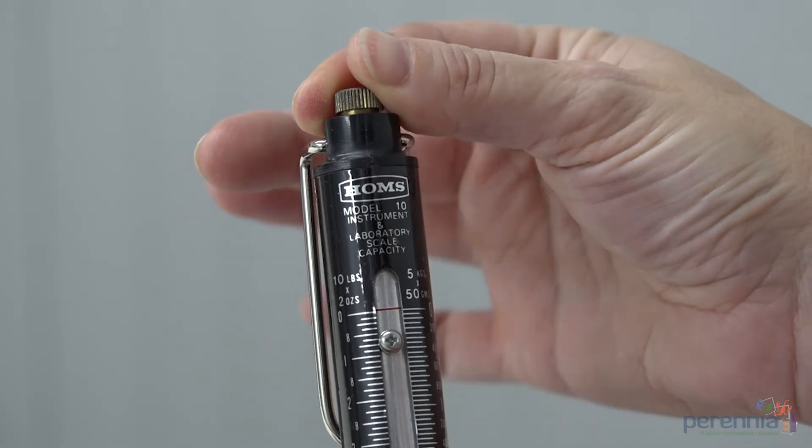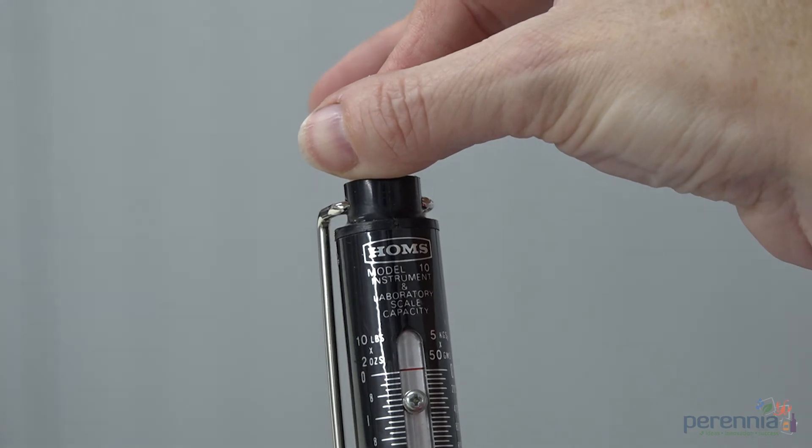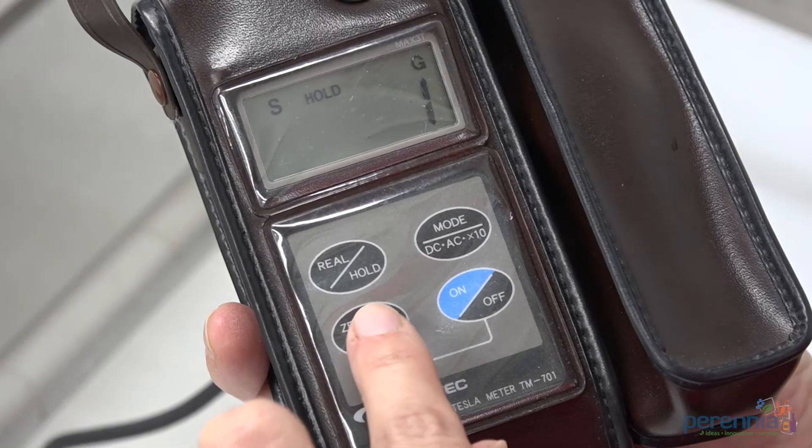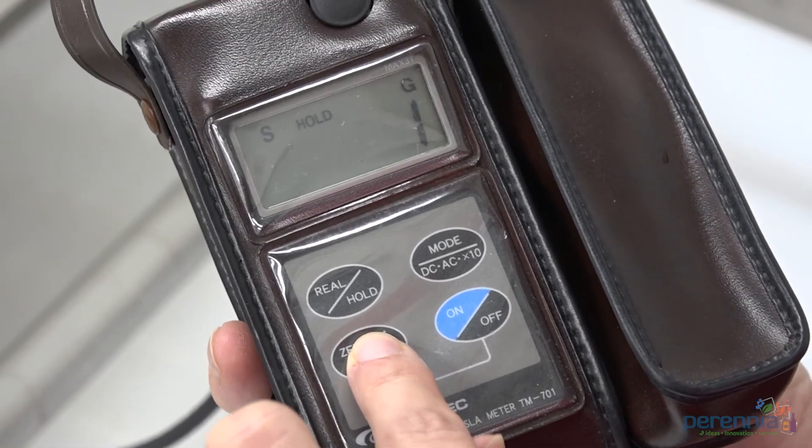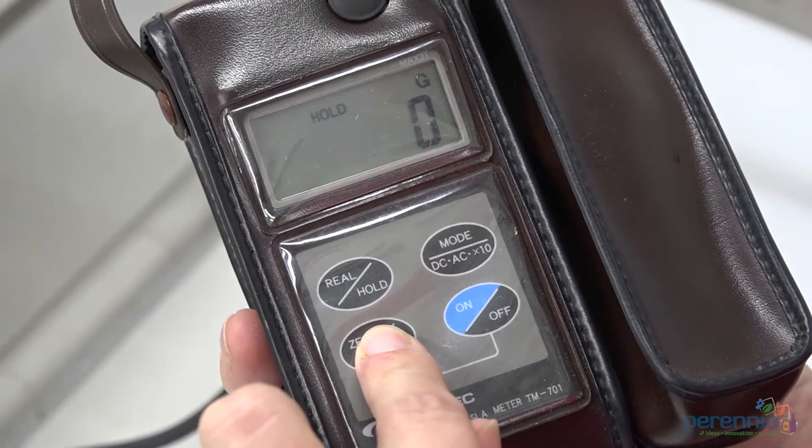Zero the scale with the appropriate pull test piece by rotating the adjustment knob on top until the scale line measures zero. For the digital, press the zero button until it reads zero.